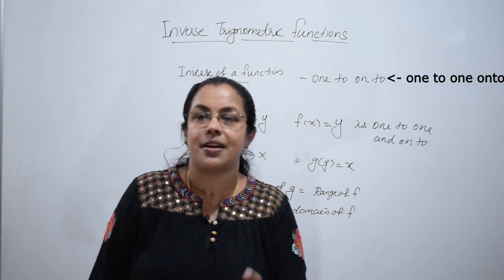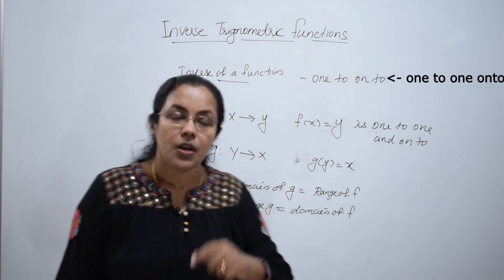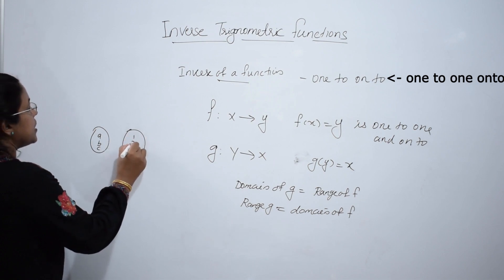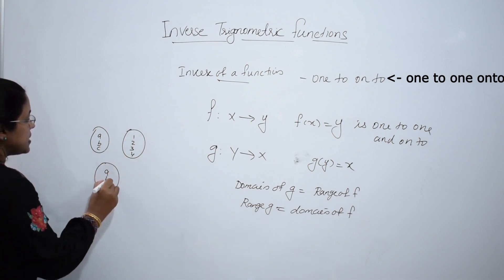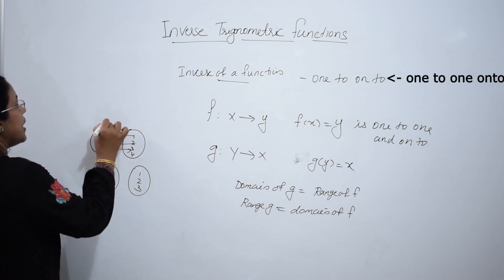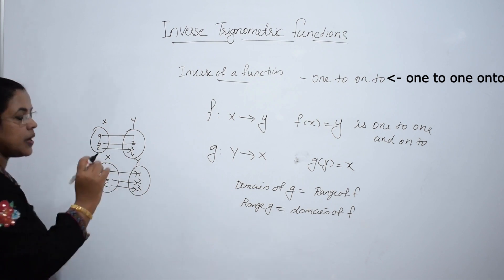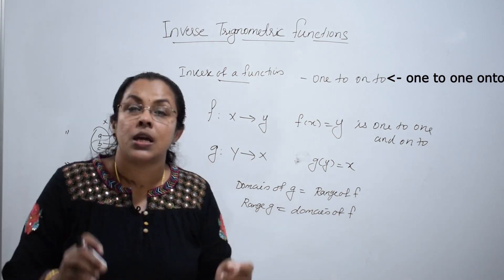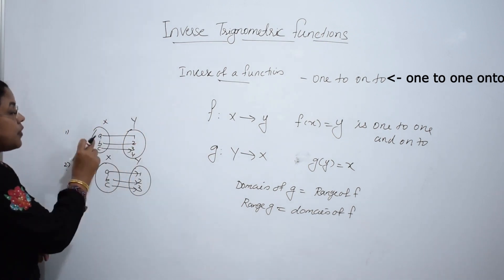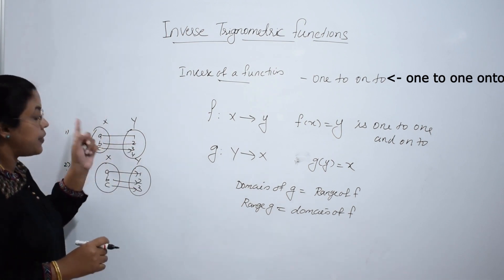All these are mathematical terms. It is difficult to understand, so I am going to explain it with the help of arrow diagrams. Look at these two arrow diagrams. Both are one to one functions. Inverse exists only if we can define a function from Y to X. Look at the first case — it is a function from X to Y, but if we define a function from Y to X, element 4 does not have any image in X. So, this is not at all a function.